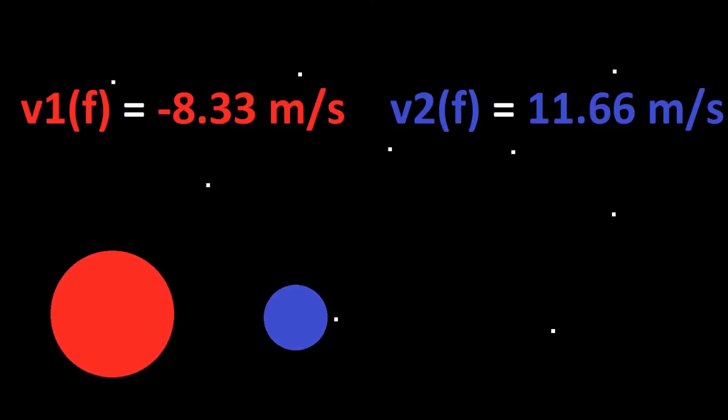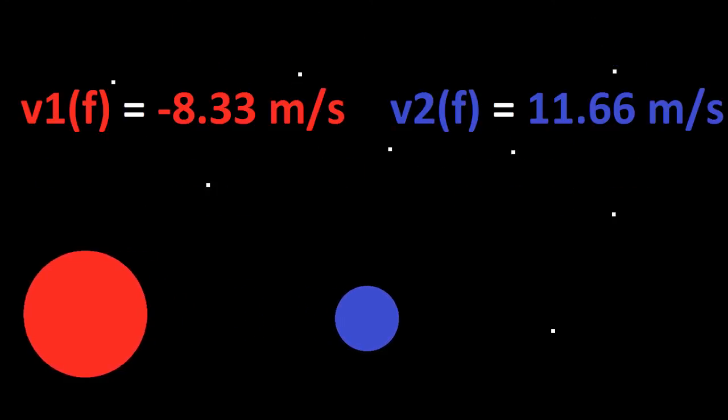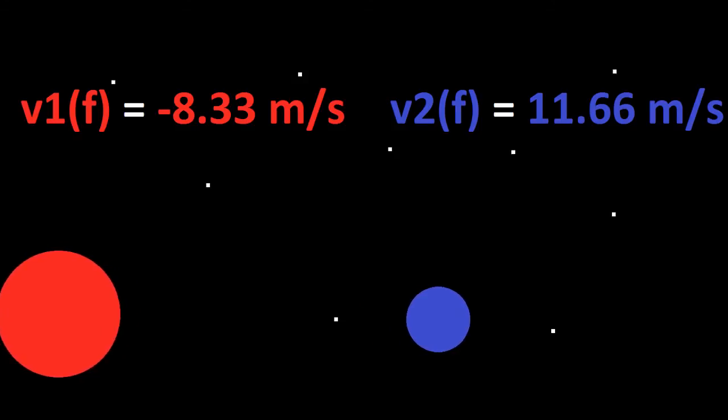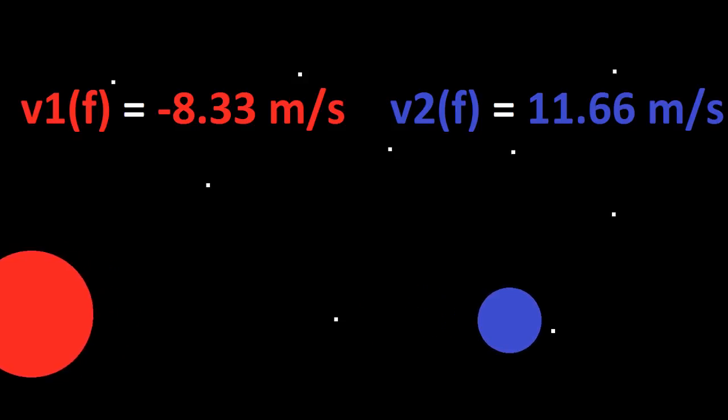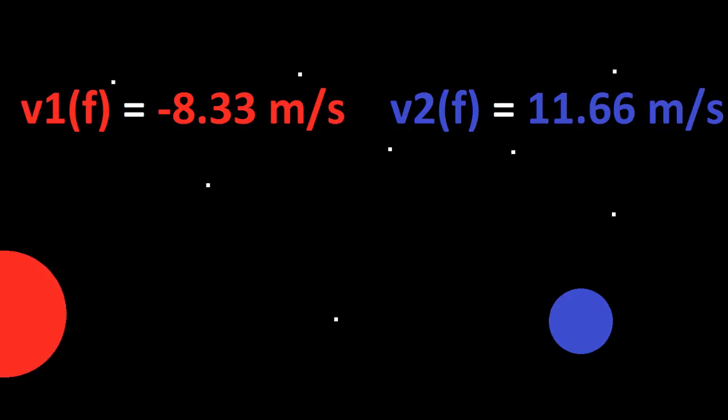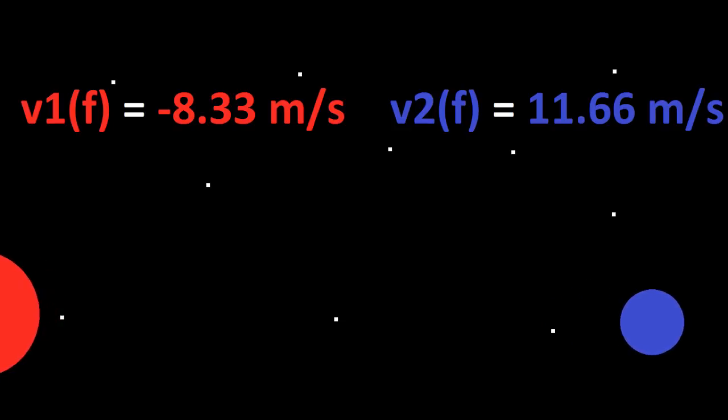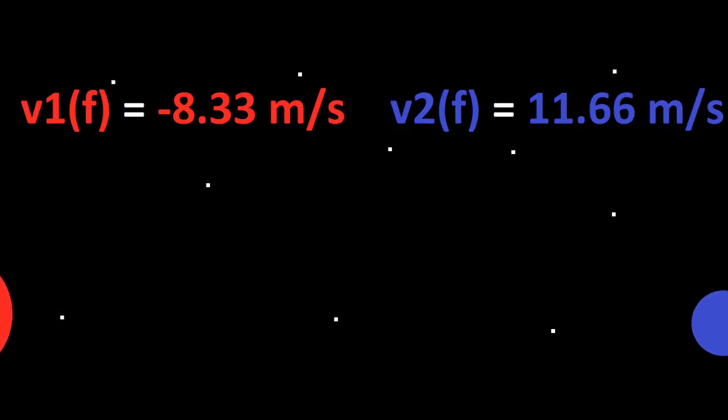After you plug all your numbers into the equations, you get for v1 final, or the velocity of the red ball, negative 8.33 meters per second. And you get v2 final, or the velocity of the blue ball, as 11.66 meters per second.